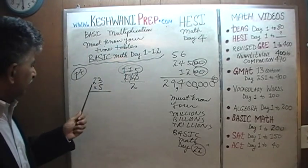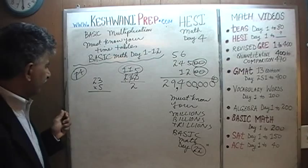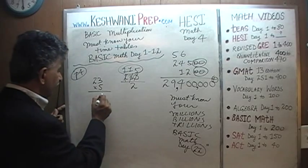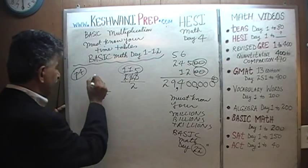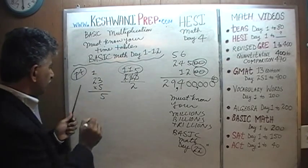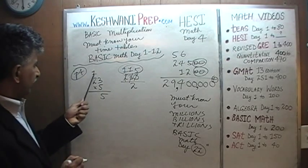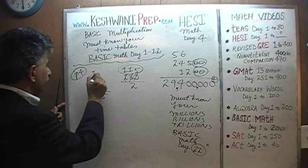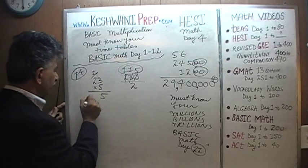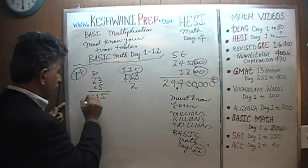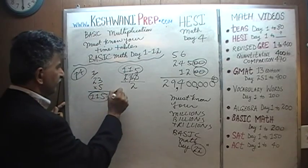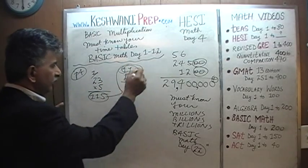Let's do it now. Three fives are fifteen — write five, carry one. Two fives are ten, plus one is eleven. One hundred and fifteen, just as we said.